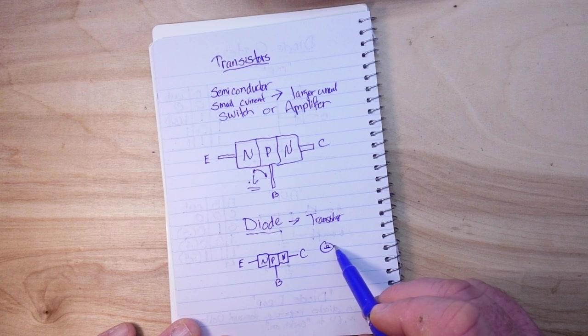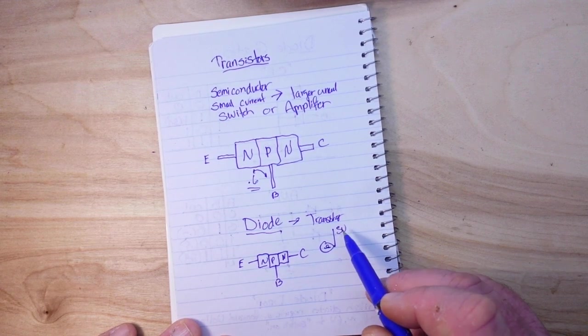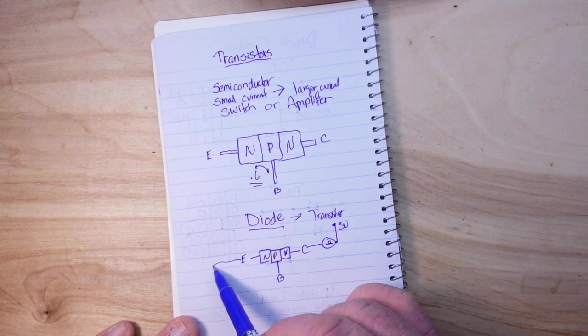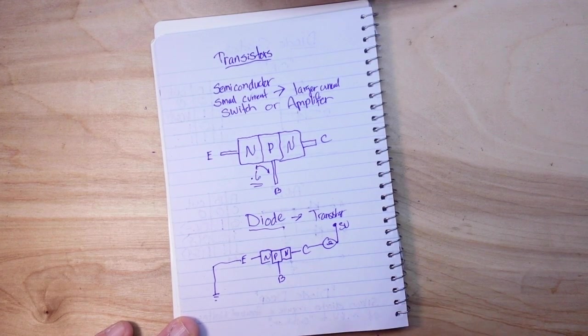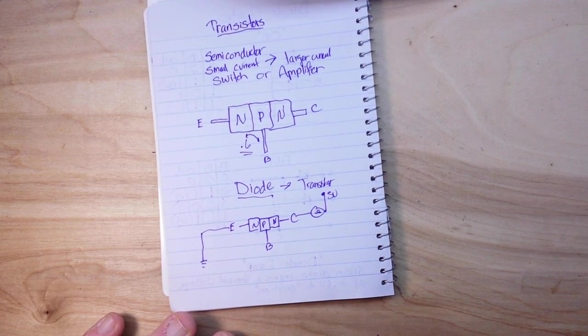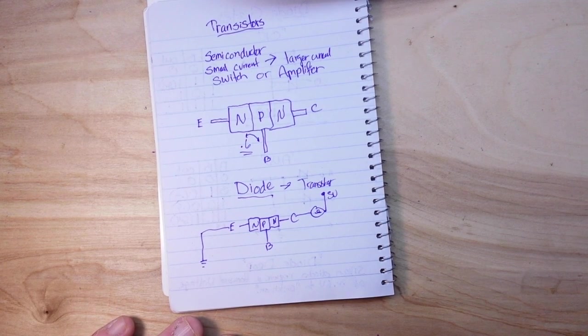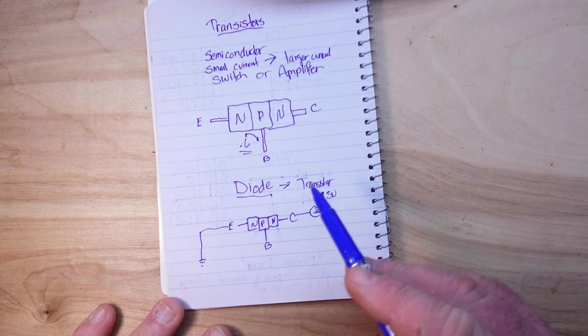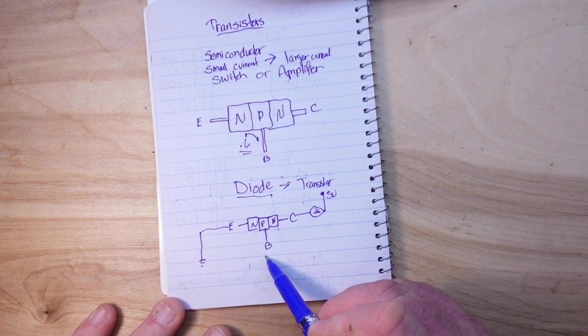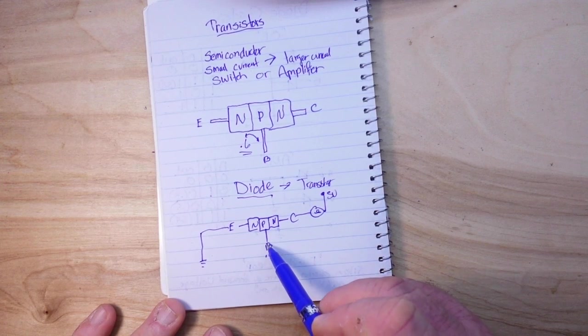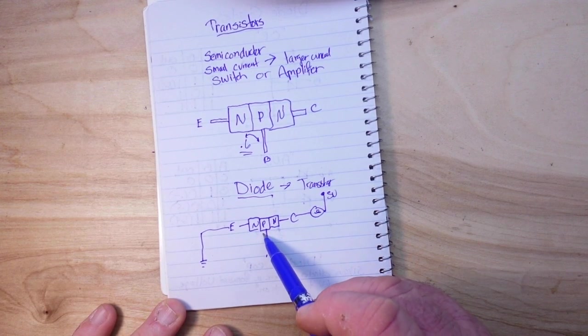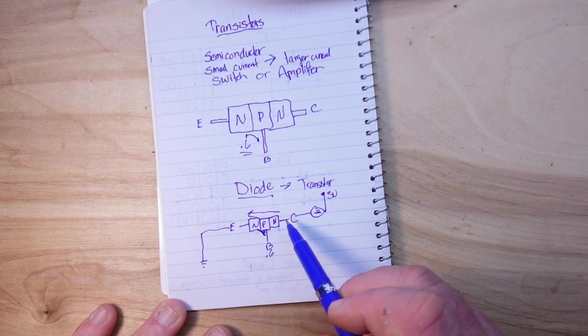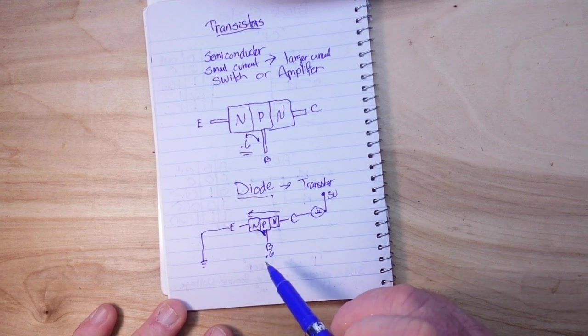And our emitter going to ground, something like that. Well, nothing is going to happen, that bulb is not going to light until we give at least 0.6 volts into the base, which opens up this junction and allows current to flow through the collector-emitter junction.